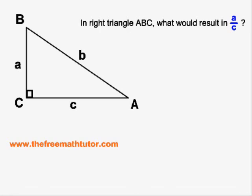In this situation, we are being asked what would result in A over C. What this question is asking is if we apply the SOHCAHTOA formulas, which of those formulas would have A over C on the right side of the equals?